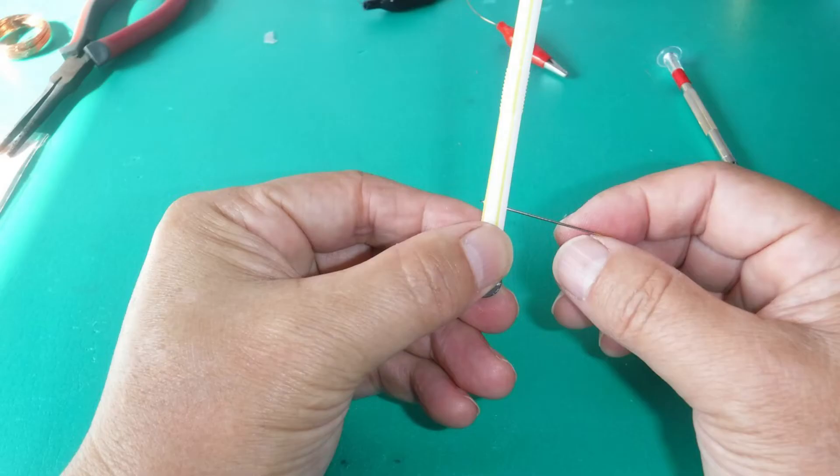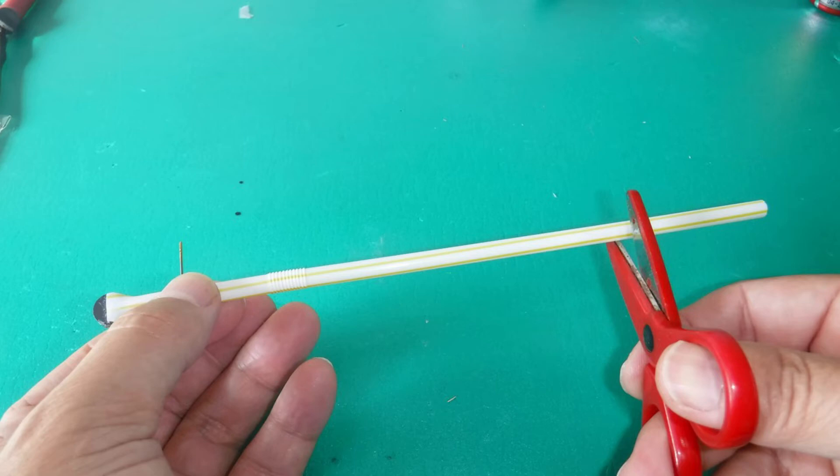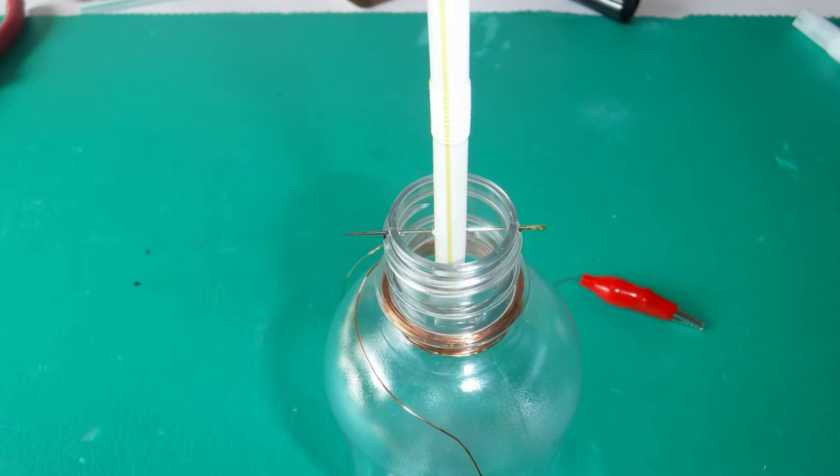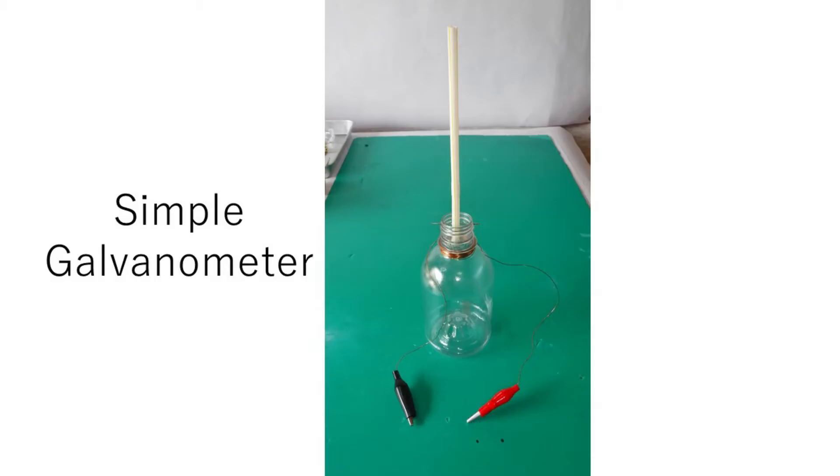Insert the needle into the straw where the magnet is at the height of the wire. Cut the straw until the magnet side is a little heavier. The galvanometer is ready.